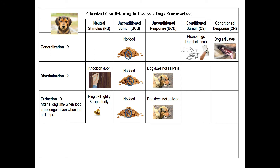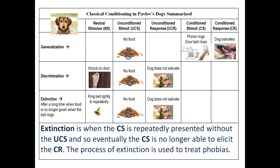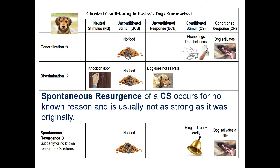Extinction: after a long time when food is no longer given and the bell rings, or when you ring the bell very lightly and repeatedly with no food given, the dog doesn't salivate. Extinction is when the CS is repeatedly presented without the UCS, and so eventually the CS is no longer able to elicit the CR. The process of extinction is used to treat phobias. Spontaneous resurgence of a CS occurs for no known reason and is usually not as strong as originally — suddenly the conditioned response returns, and the dog salivates a little, because it has the subconscious memory that the bell was associated with salivation.